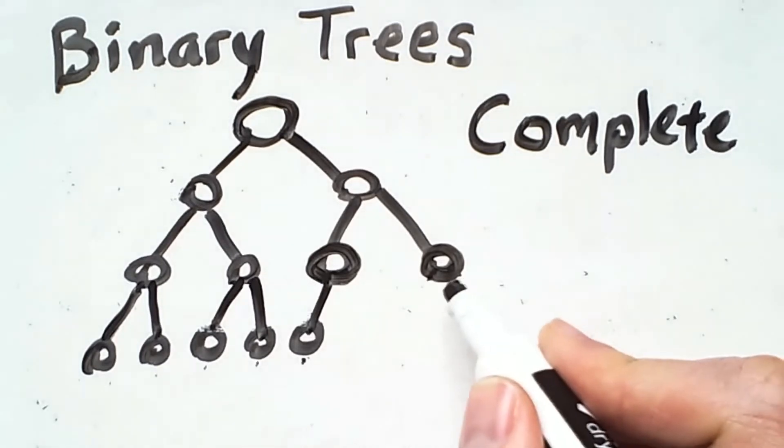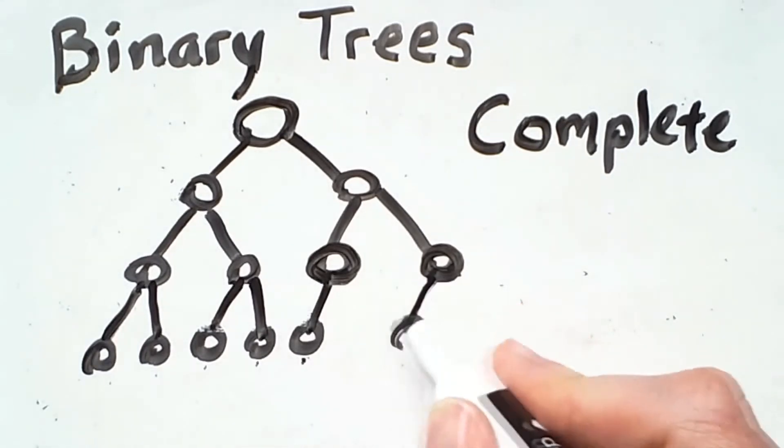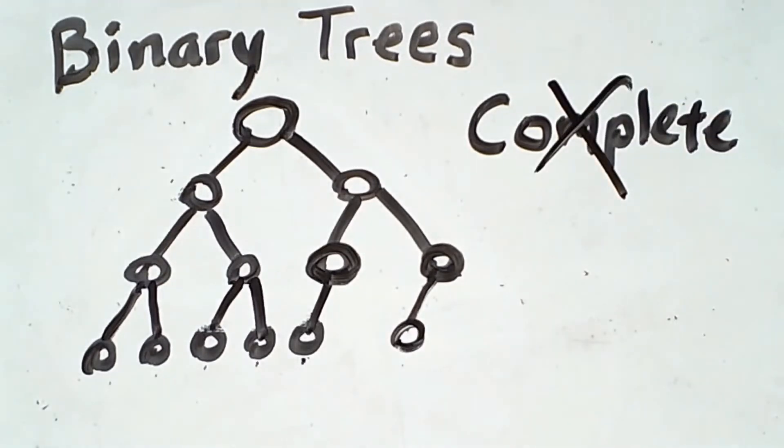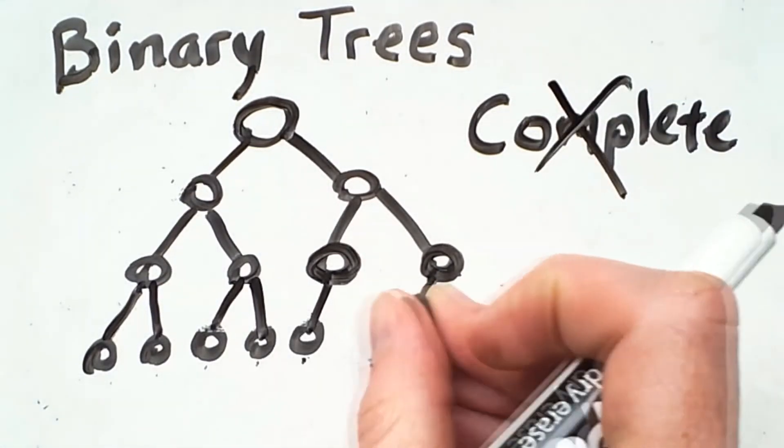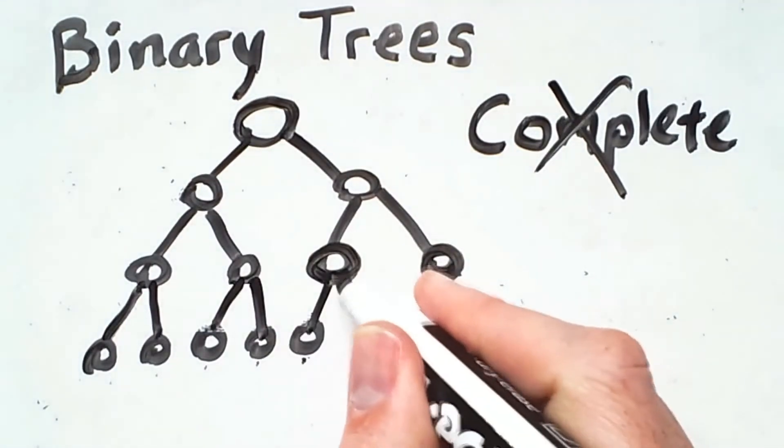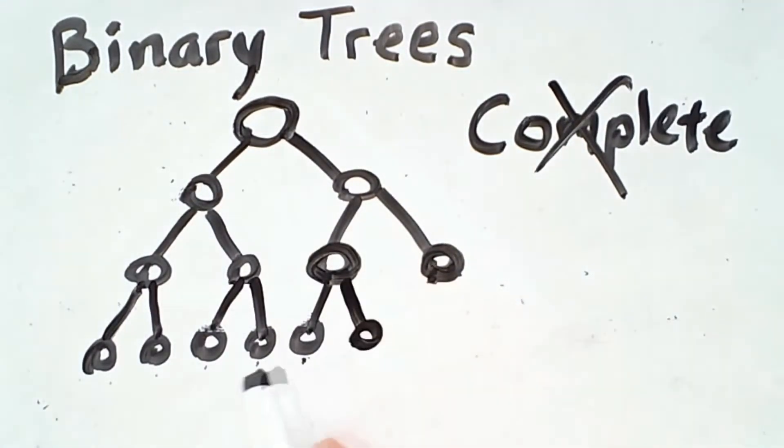So for example, if I put a leaf node here, then this is no longer a complete tree. However, if I have a leaf node here adding one more node to this left to right sequence, then it is a complete tree.